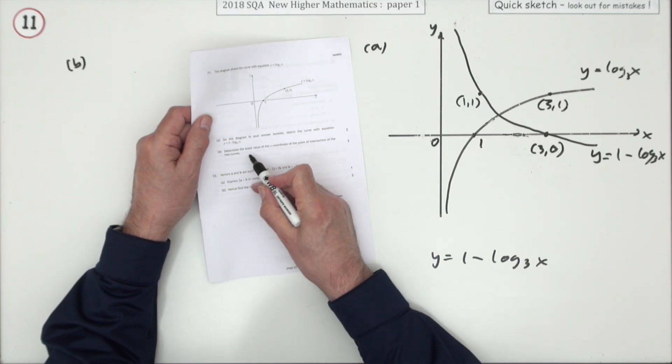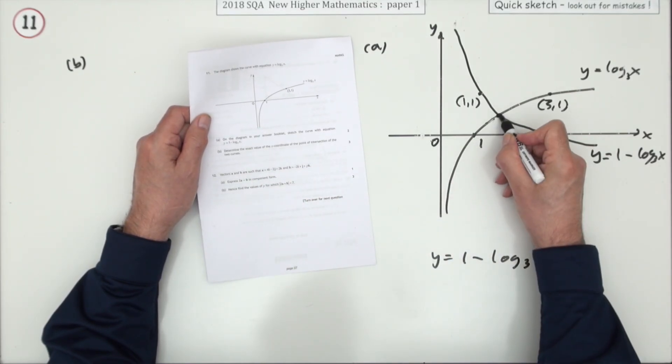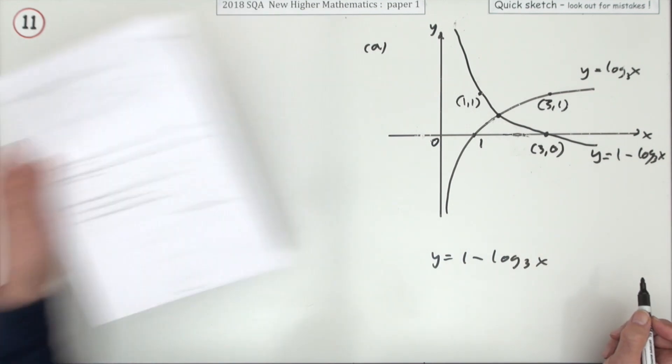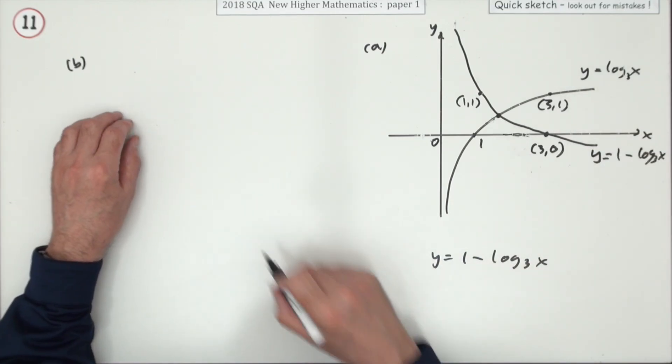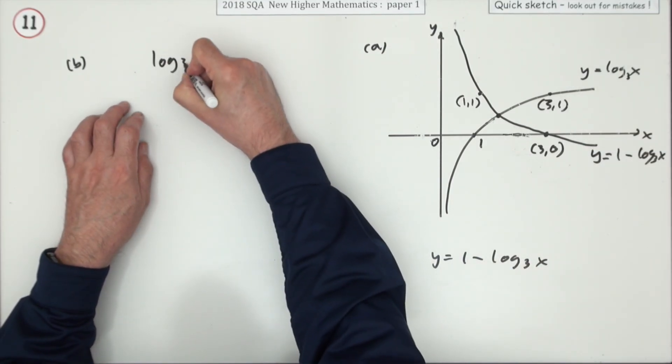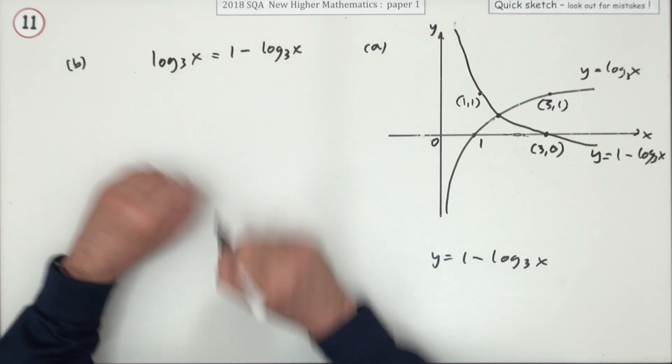Part b, determine the exact value of the x-coordinate of the point of intersection. The point of intersection simply means this will equal that at this point of intersection, the two y-coordinates must be the same, so that log₃x must equal 1 minus log₃x.